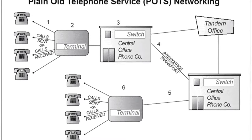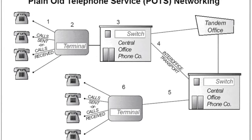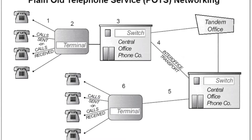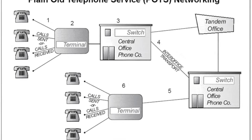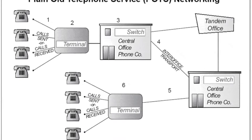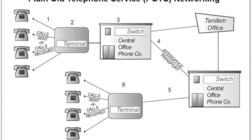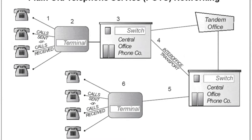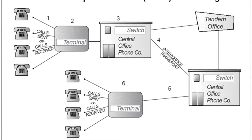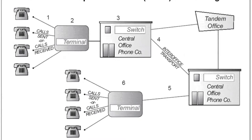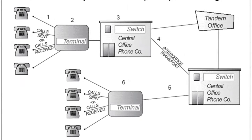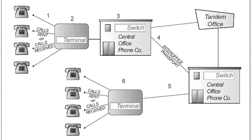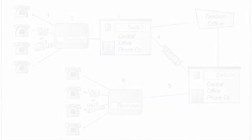POTS is an inexpensive circuit-switched telecommunications service, but it supports data transfer speeds of up to only 56 kilobits per second. It typically takes 15 to 30 seconds to establish connections for data transfer using modems.